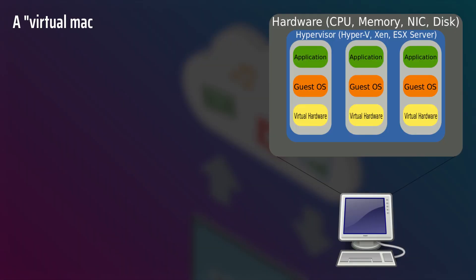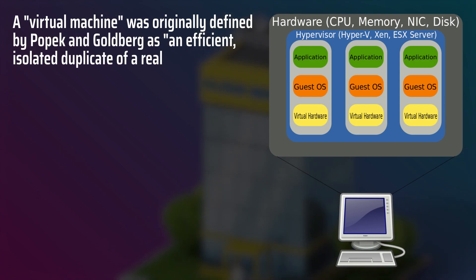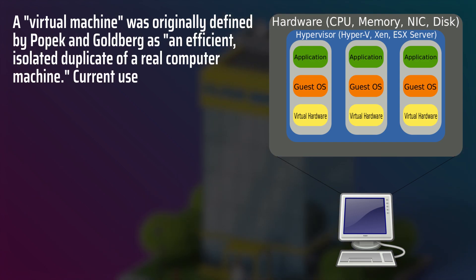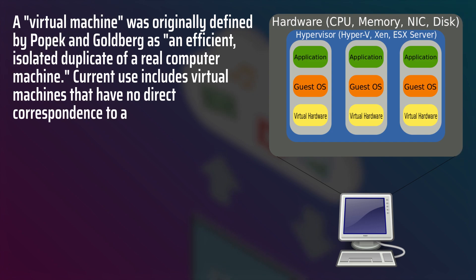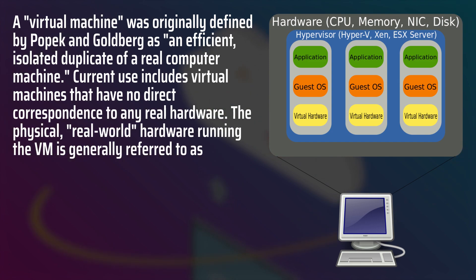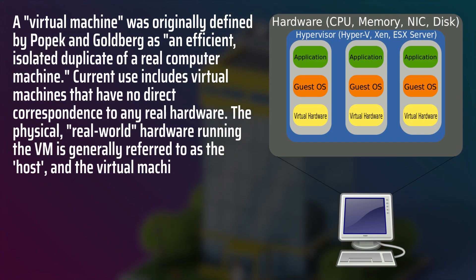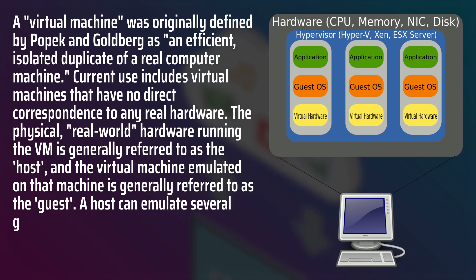A virtual machine was originally defined by Popik and Goldberg as an efficient, isolated duplicate of a real computer machine. Current use includes virtual machines that have no direct correspondence to any real hardware. The physical, real-world hardware running the VM is generally referred to as the host, and the virtual machine emulated on the machine is generally referred to as the guest.